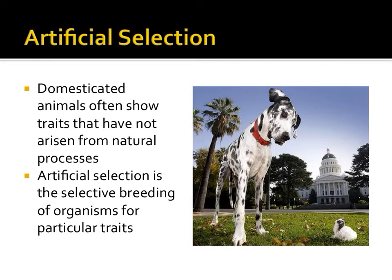While natural selection can cause evolution, so can humans' intentional influence on domesticated animals. Cows are bred to produce a large amount of milk for humans to drink. Dogs are bred for hunting, sniffing, ratting, water rescue, and just looking adorable. This intentional breeding is referred to as artificial selection, and would probably not be beneficial to these organisms if they were living in the wild. This is not survival of the fittest — not natural selection.